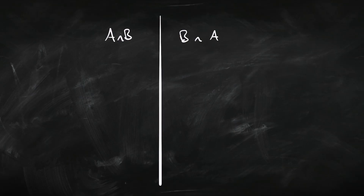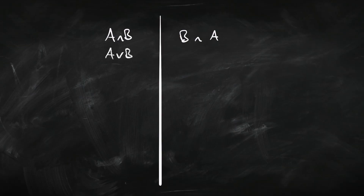Starting with conjunction: A and B is equivalent to B and A. The conjuncts A and B could be switched around — it doesn't change the meaning or the truth table. A and B means both, so it doesn't matter whether we do A or B first. Similarly, A or B and B or A are equivalent, because that means at least one of them is true, and the order doesn't matter.